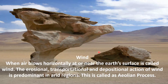First, let us see about the action of wind. When air blows horizontally at or near the earth's surface, it is called wind. The erosional, transportational and depositional action of wind is predominant in arid regions. Arid regions are dry areas with barren land surface and very less moisture. Since there is no natural vegetation, there are no trees to restrict the speed of the wind. So the action of wind is predominant in arid regions, and this is also called the eolian process.